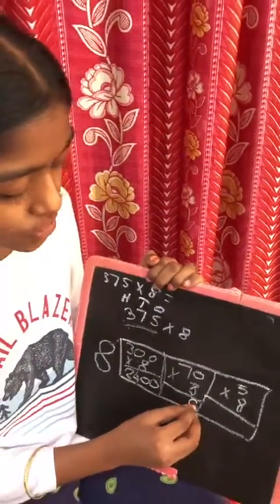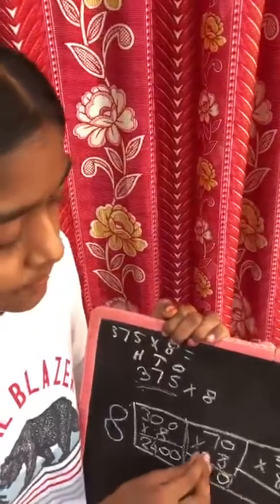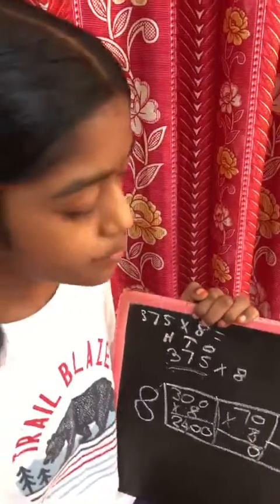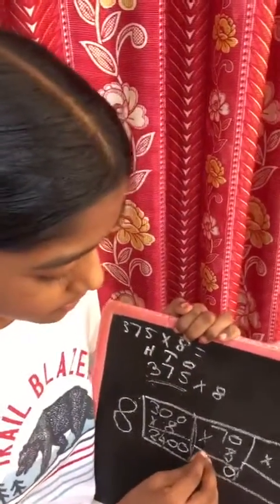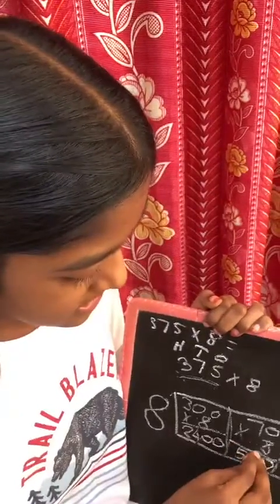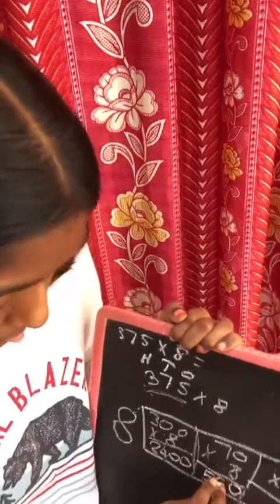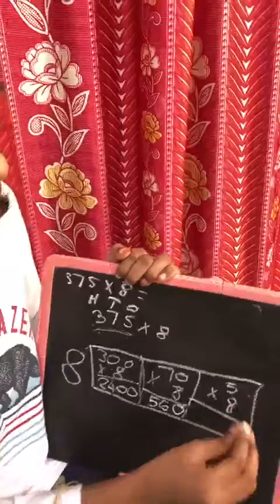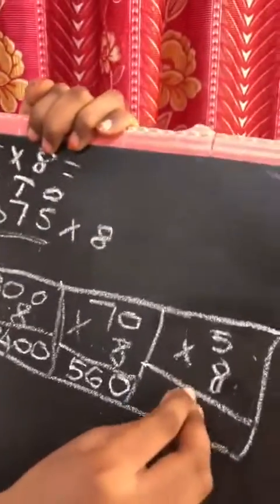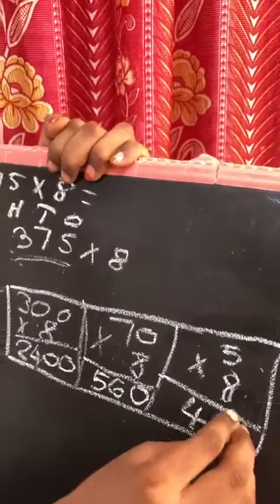Put 0 in the 1's place. Then do 7 times 8. 8 times 7 is 56. Then do 5 times 8. 5 times 8 is 40.